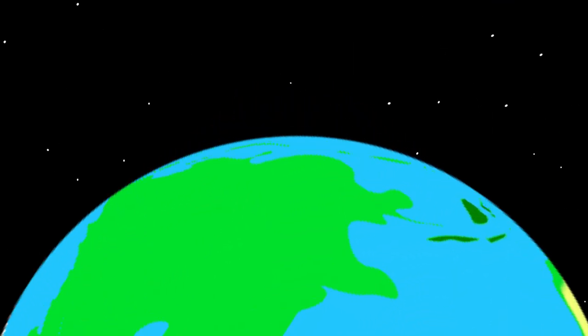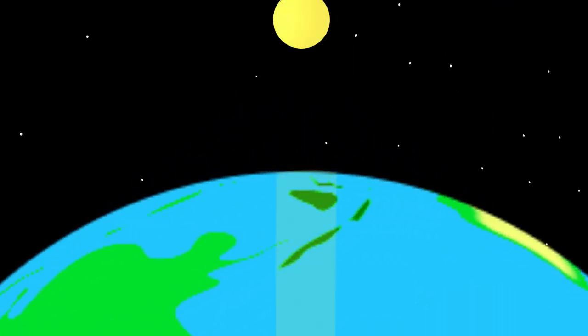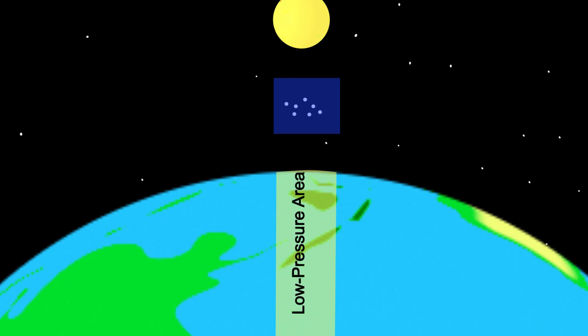Around the equator, the sun is often high in the sky and it is very hot. Water is heated and evaporates. The air is also heated and warm air can contain a lot of water vapor. Because the air column is warm, it expands. Because this air column expands, it is lighter than the surrounding air. We call this a low pressure area.